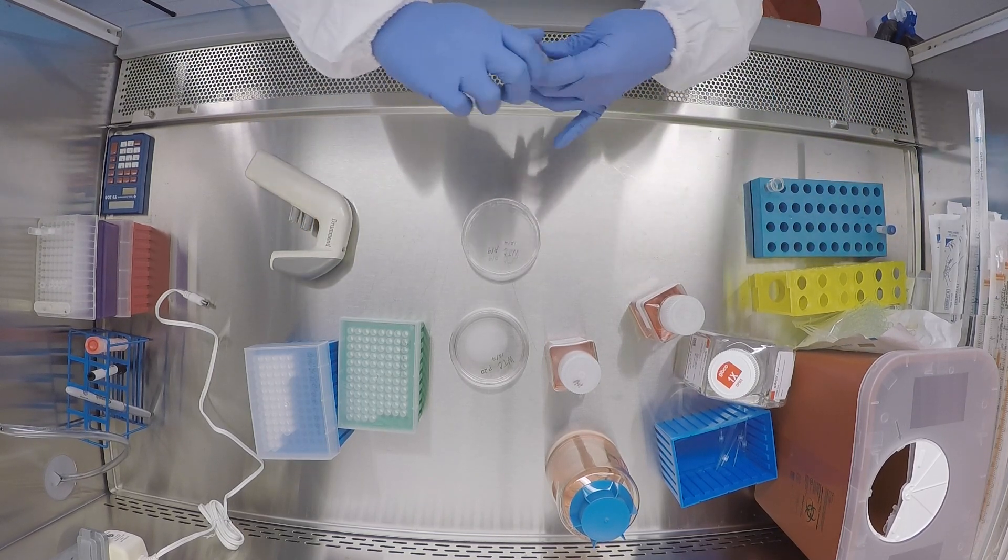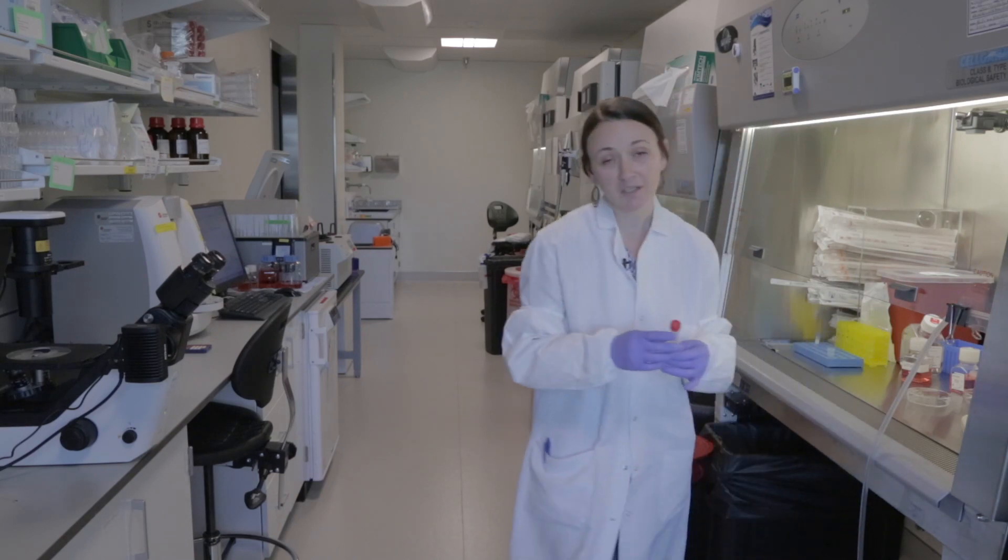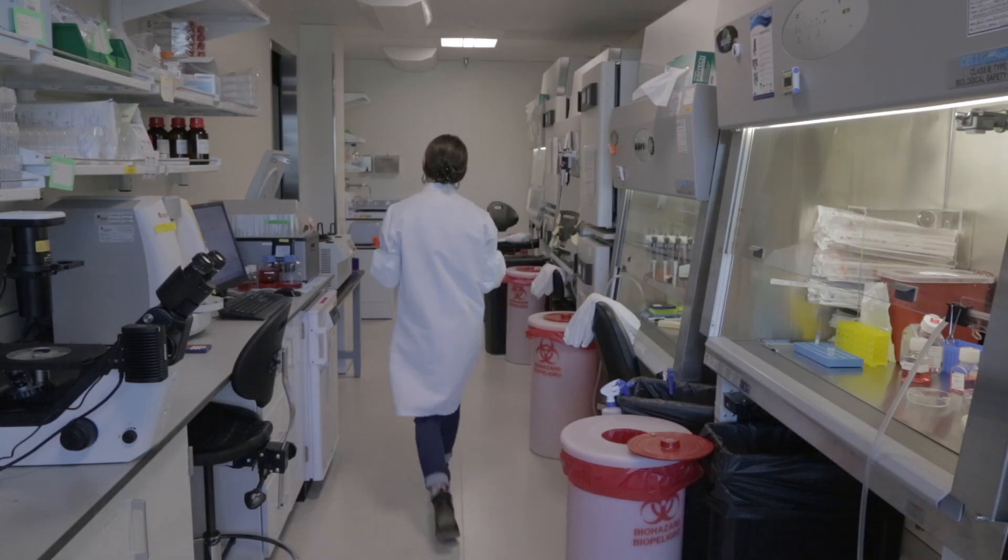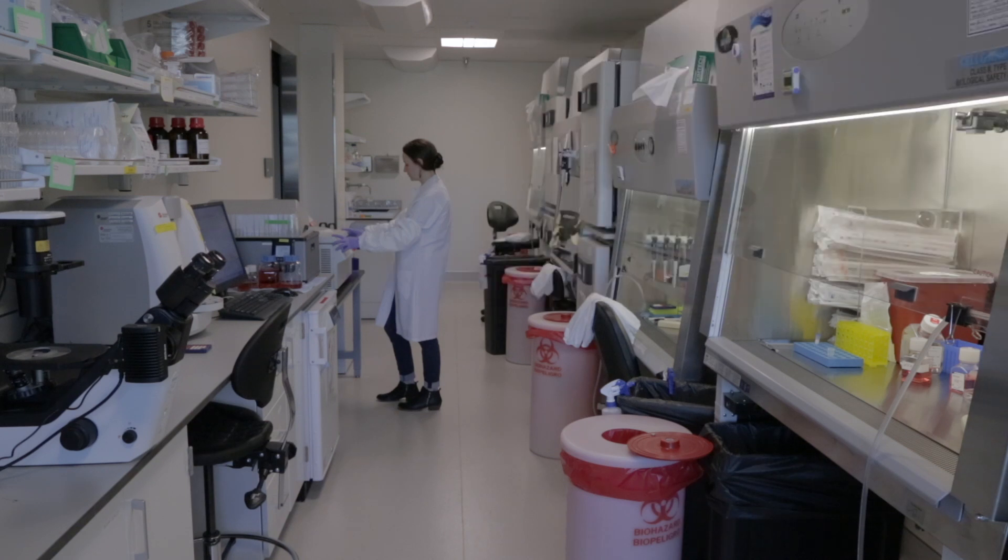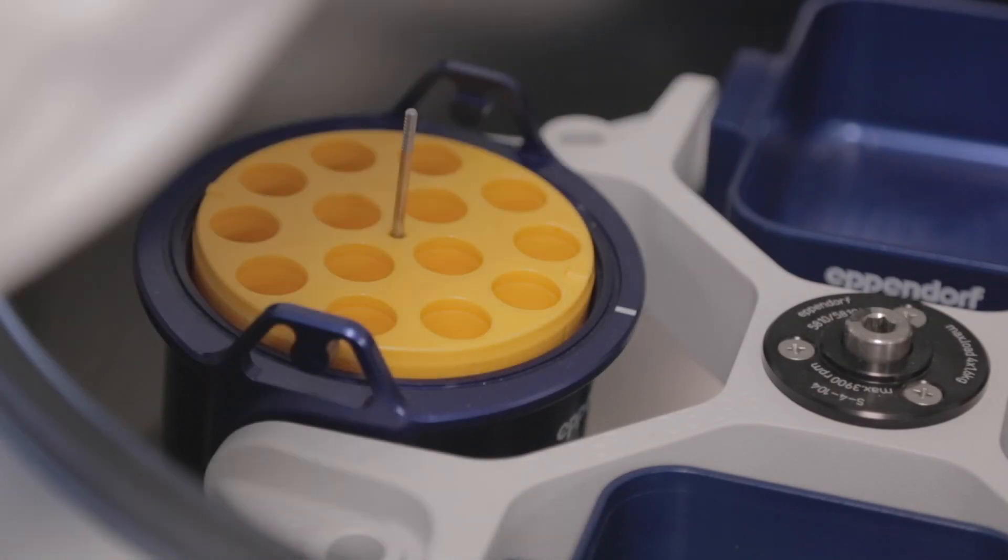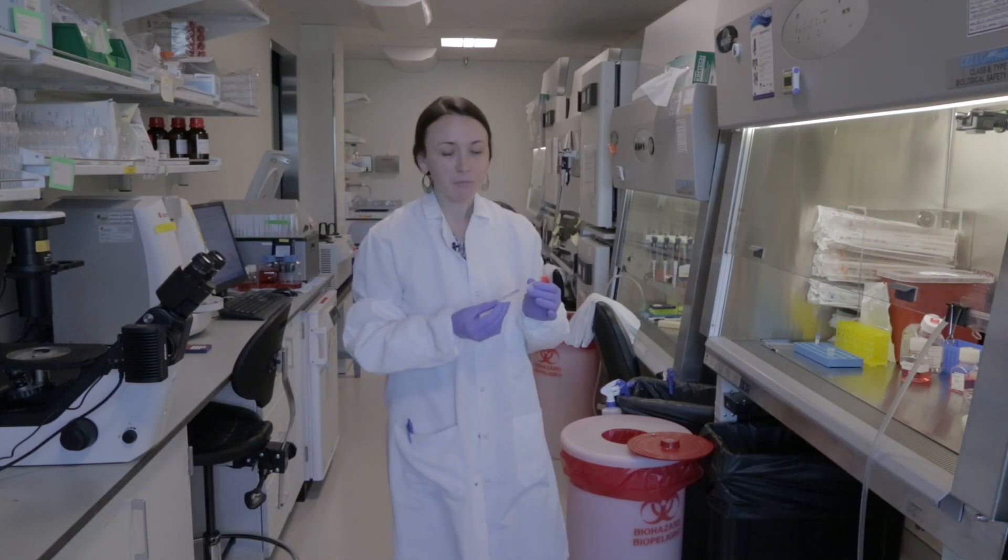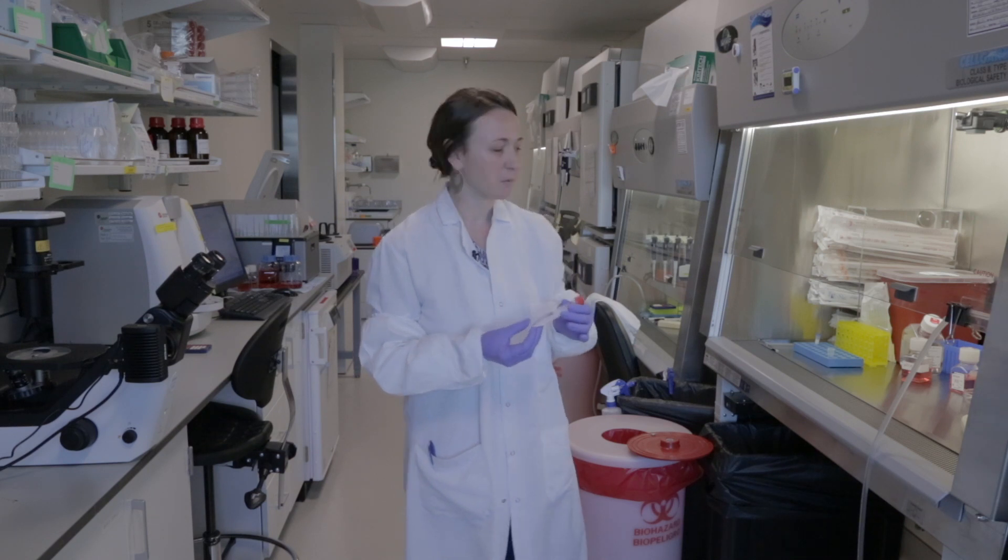Now we can pellet the cells by centrifugation. We're going to spin them at 211 XG for three minutes at room temperature. Our cells have been pelleted. Since I harvested out of a 10 centimeter plate, I'm going to have a pretty good pellet of cells, so it should be visible by eye.